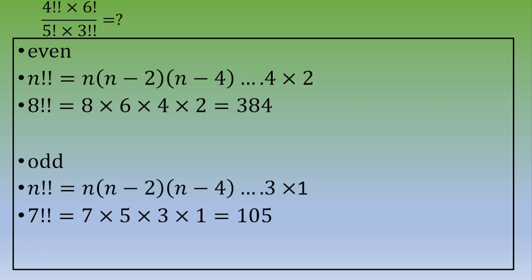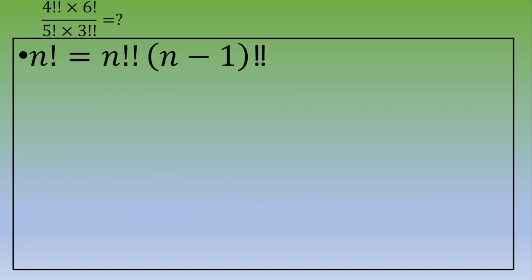One useful thing about the double factorial function is a formula relating it to the simple factorial. n factorial equals n double factorial times (n minus 1) double factorial. Additionally, 0 double factorial equals 1.